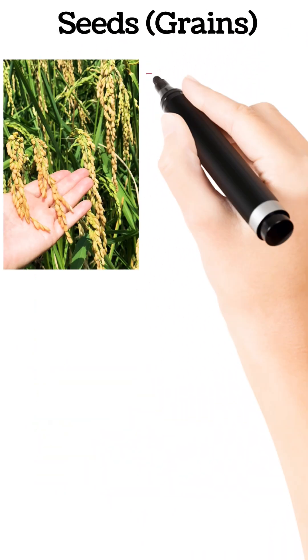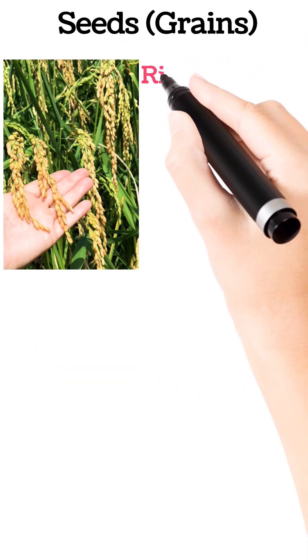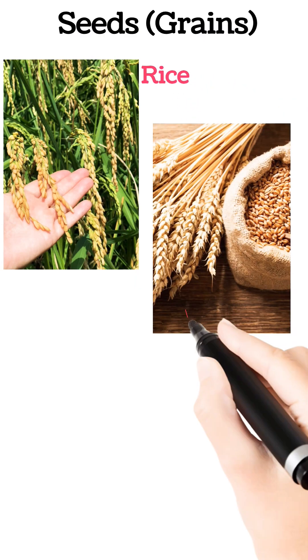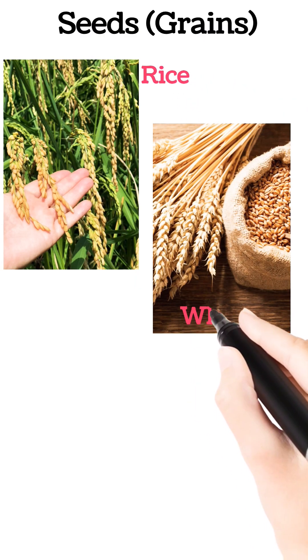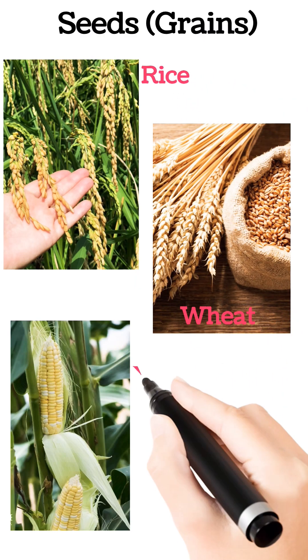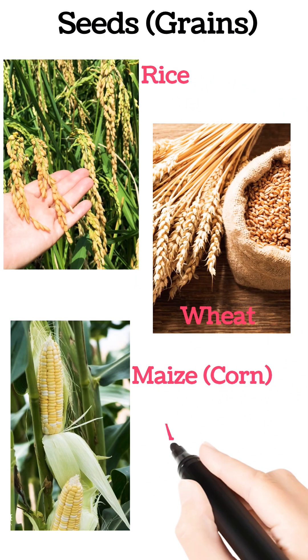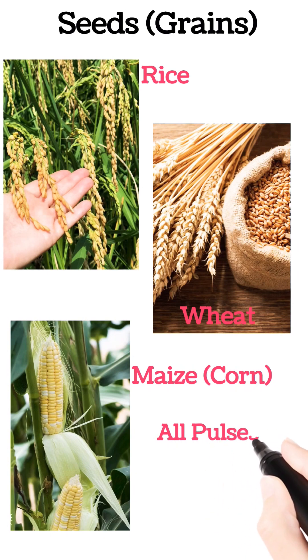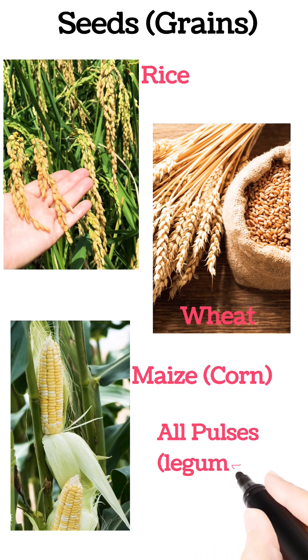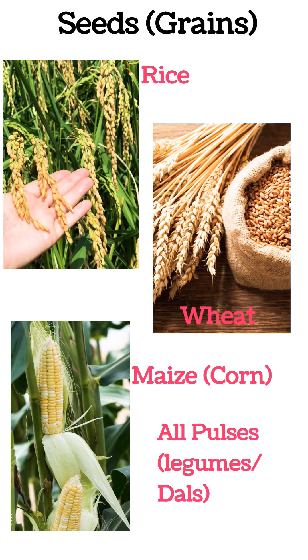Seeds and grains — rice, wheat, maize, corn. All pulses, legumes, and dals that we eat are seeds.